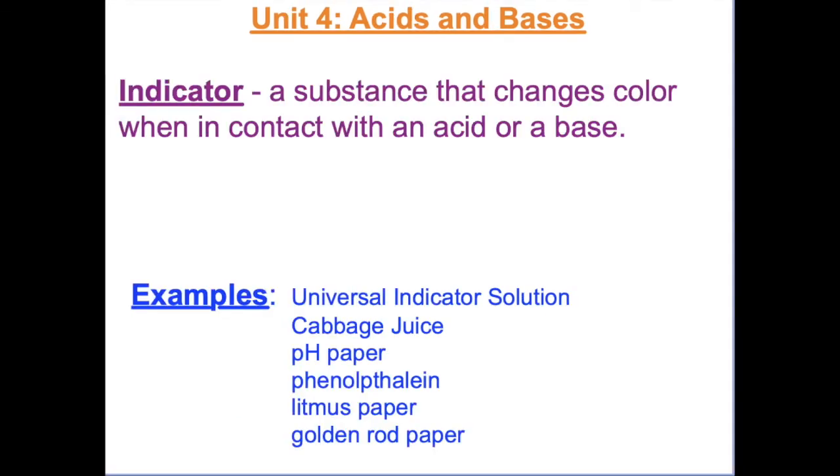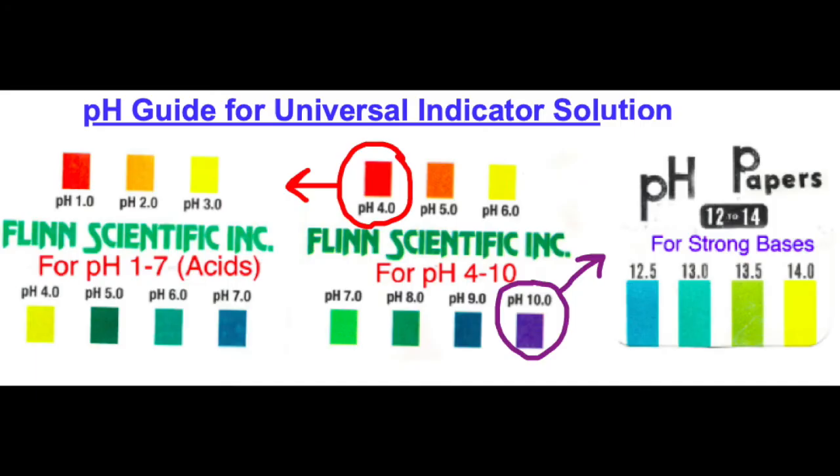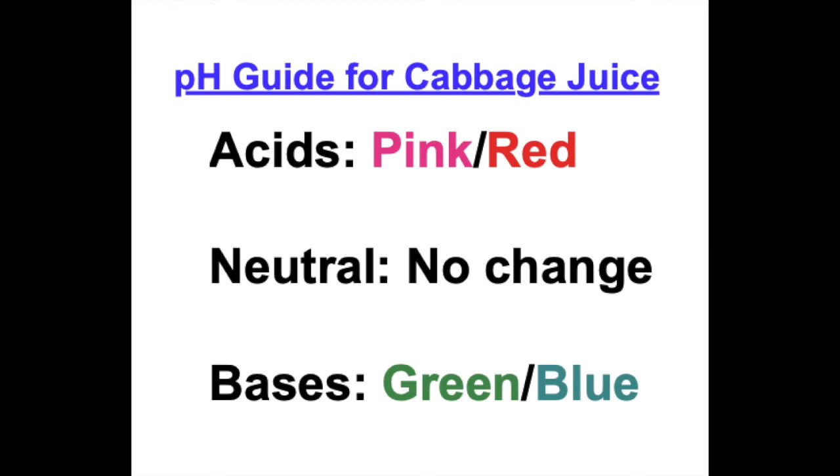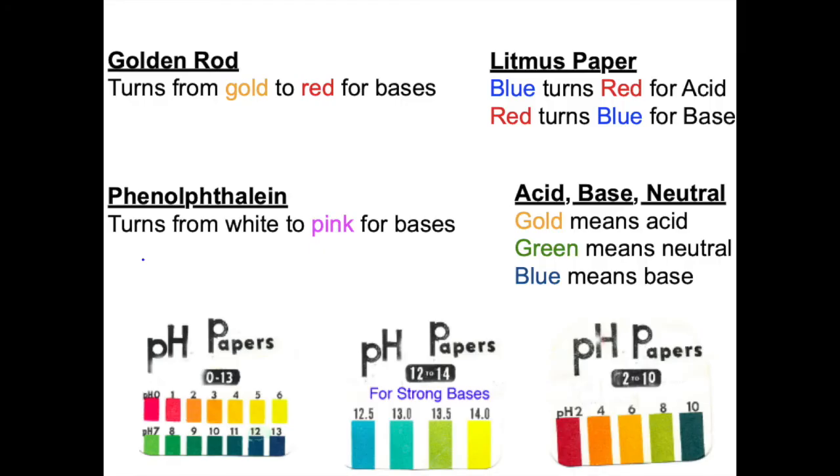The last thing to discuss here are indicators. An indicator is a substance that changes color when in contact with an acid or a base. There are many types of indicators, and different indicators turn different colors. You must know which kind of indicator you are using and compare the color change you observe to a known chart and determine the pH.